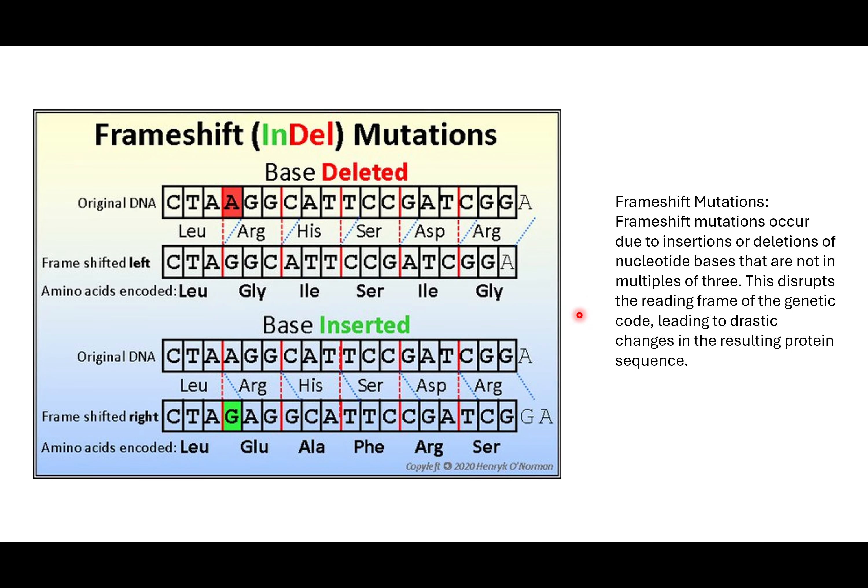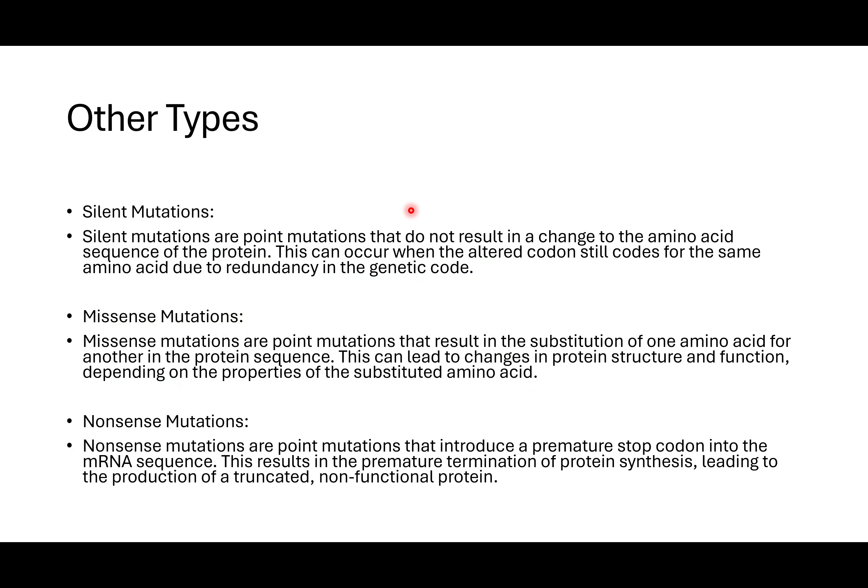We have other types of mutations not in CAPE Biology Unit One, but worth noting. Silent mutations are point mutations that don't result in a change in the amino acid sequence of the protein. This can occur when the altered codon still codes for the same amino acid, due to the redundancy of the genetic code. For example, if AGA and AGT both code for the same amino acid, that mutation is silent — it doesn't change anything.